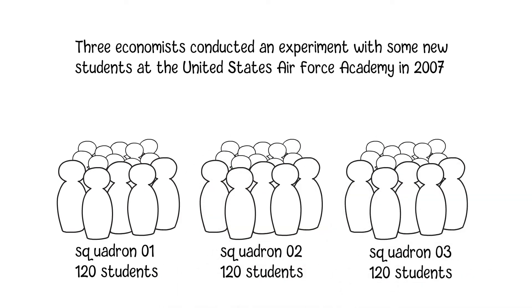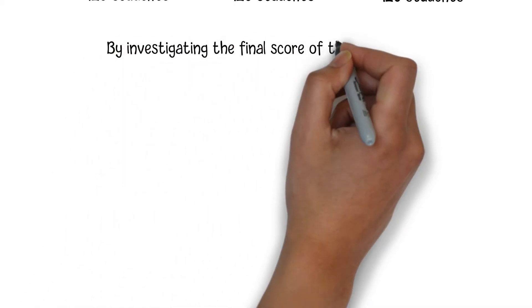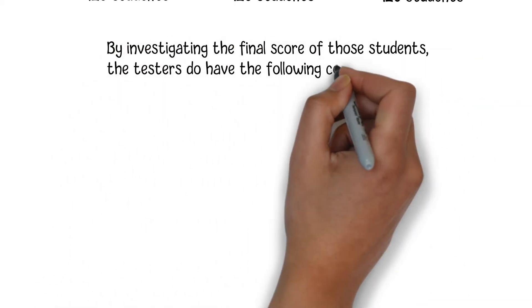Students in the same squadron live, study, and train together, which enables them to become close peers. By investigating the final scores of those students, the testers reached the following conclusion.